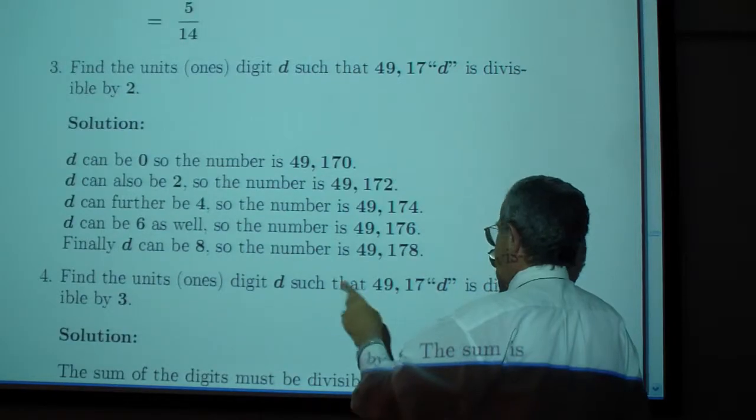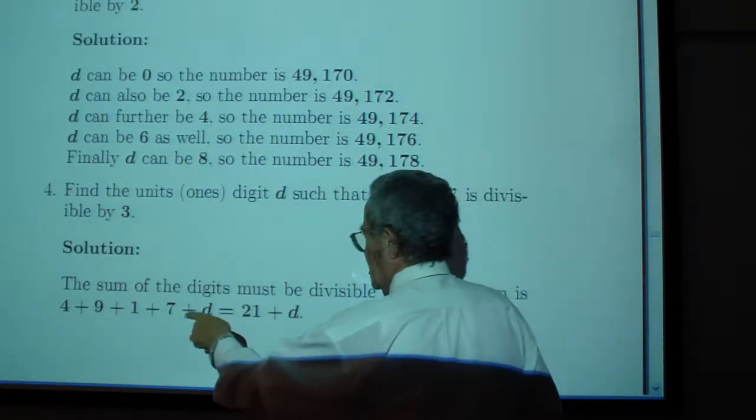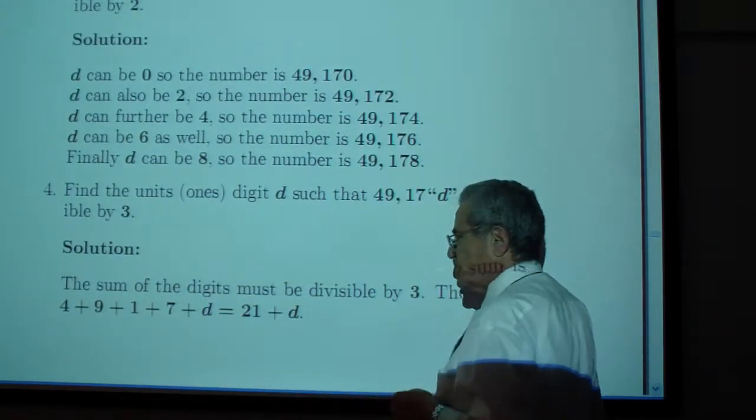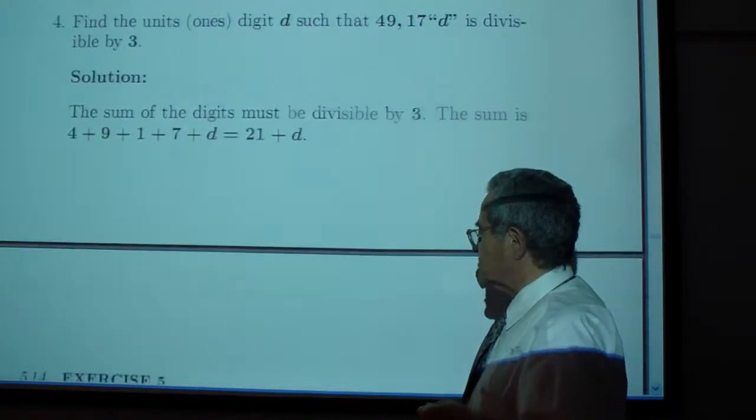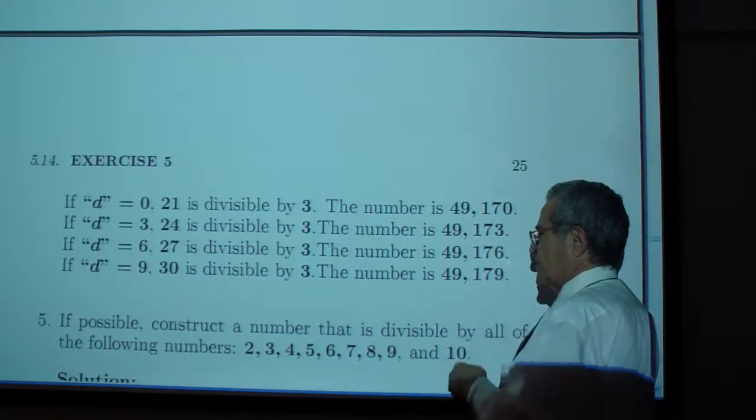If you want to divide by 3, you add the digits. You get 4 plus 9 plus 1 plus 7 plus d, which is 21 plus that digit. 21 can be divided by 3, so d could be 0 or 3 or 6 or 9. Each of these numbers can be divided by 3.